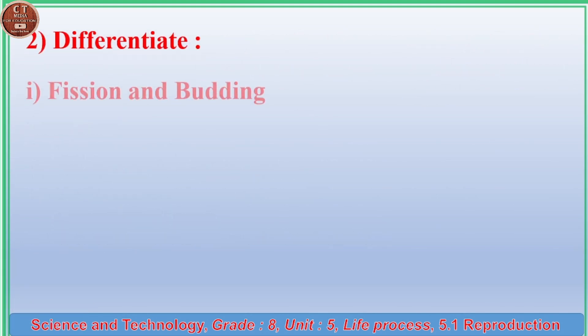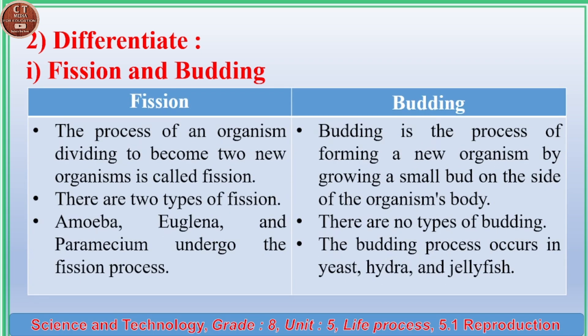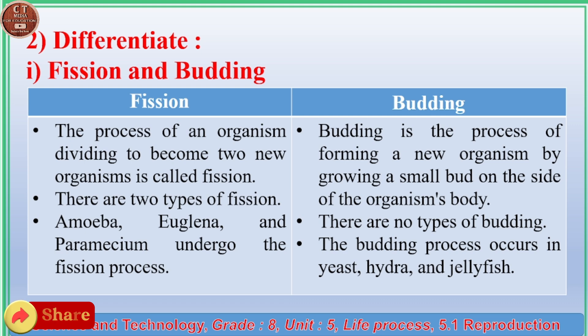Exercise 2, Differentiate: (i) Fission and Budding. Fission is the process of an organism dividing to become two new organisms. There are two types of fission. Amoeba, Euglena, and Paramecium undergo fission. Budding is the process of forming a new organism by growing a small bud on the side of the organism's body. Budding occurs in yeast, hydra, and jellyfish.